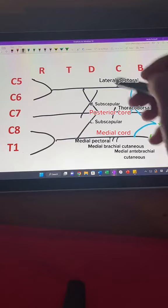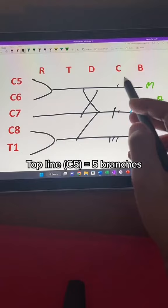And then finally, for our last branches, we look at C5. C5 means on the top branch, we need five branches. So we have one here for lateral pectoral, and we need four more.